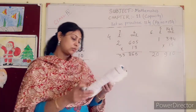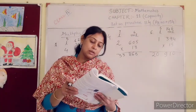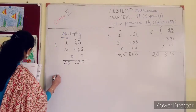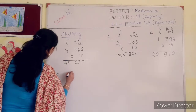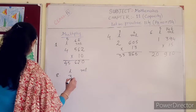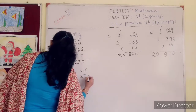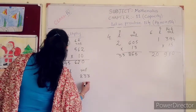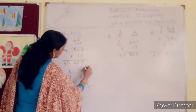Now number 8. To solve number 8, you have to make it in column. 3 liter, 233 milliliter. Multiply it by 17. 7 into 3 is 51. 5 is in your hand.